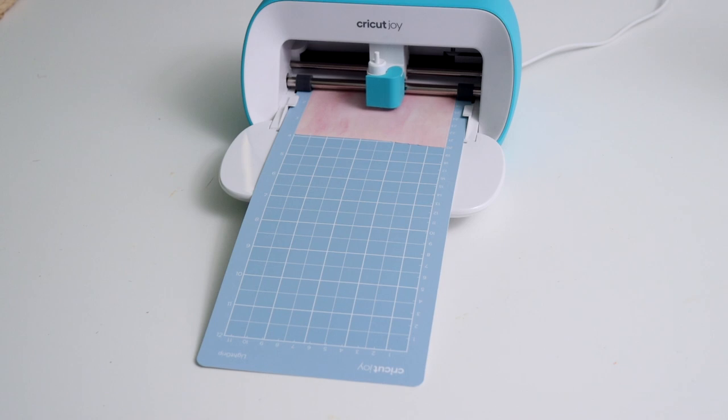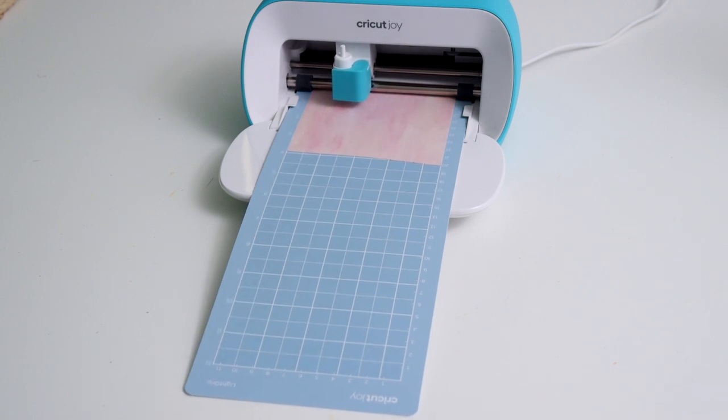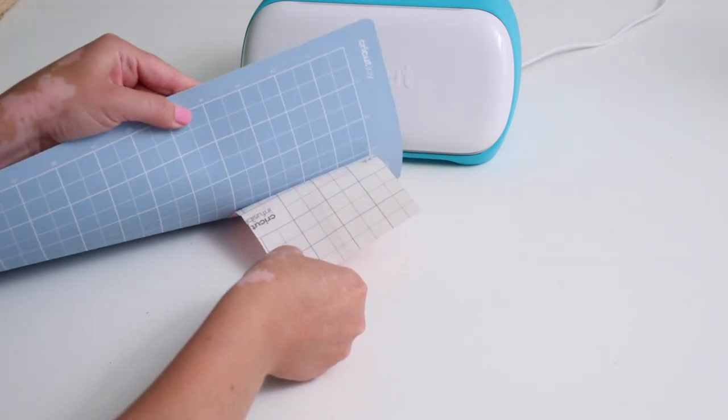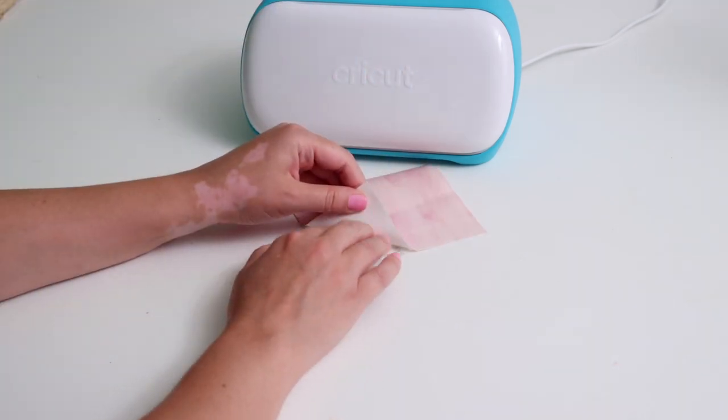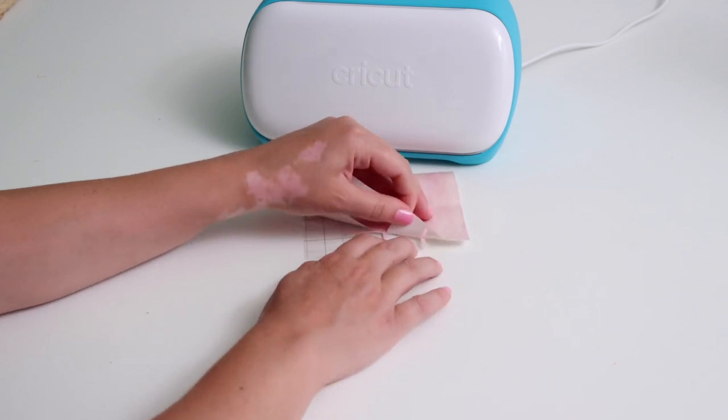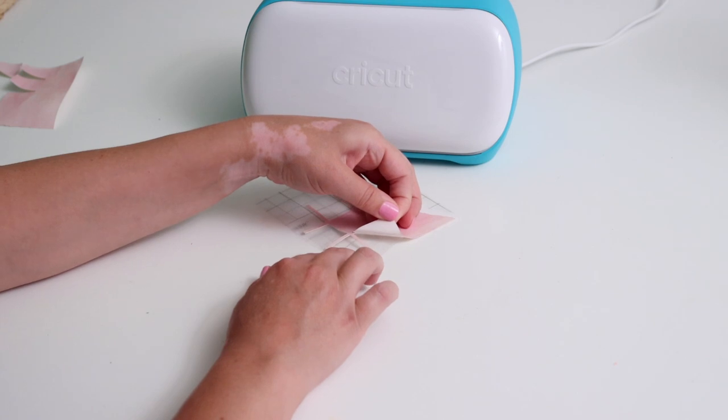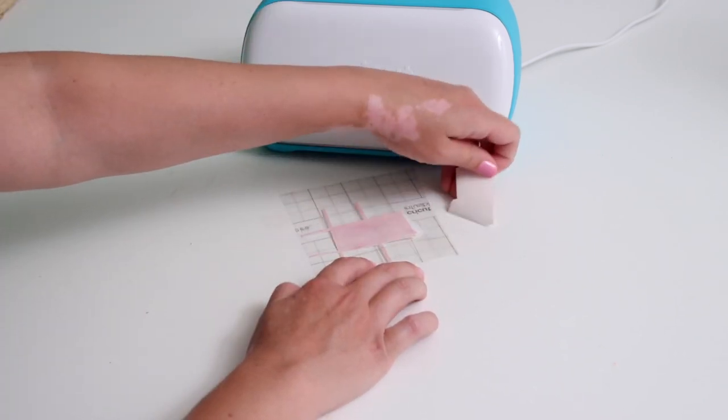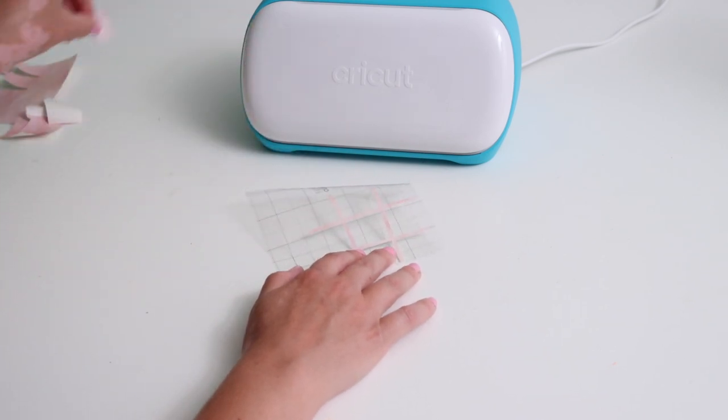And then it's going to start cutting out my grid shape that we created in Design Space. Once it's finished, I'll just pull the mat away and now I can peel away the excess material. So this was a little bit finicky just because that grid is very delicate, so I ended up having to pull this away piece by piece just so that I didn't pull away the actual grid shape from the backing.